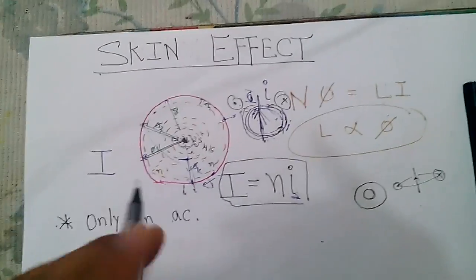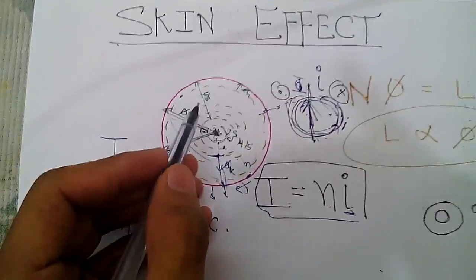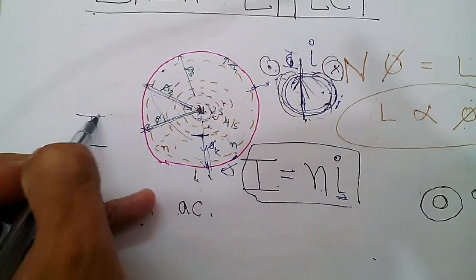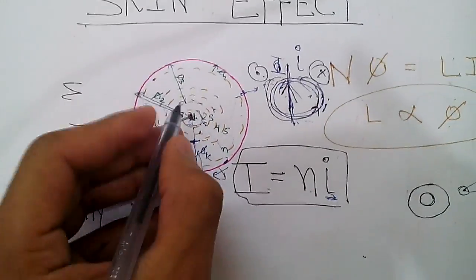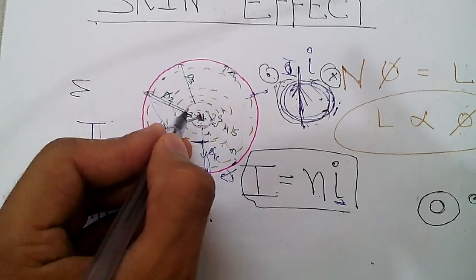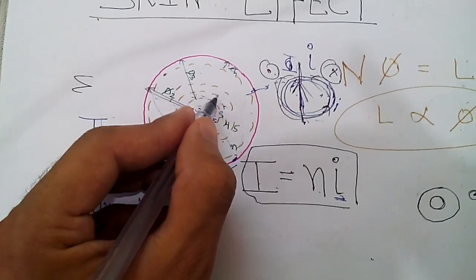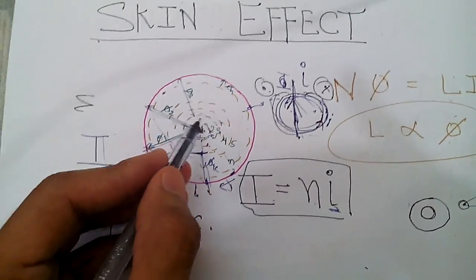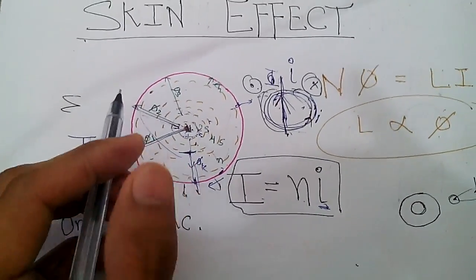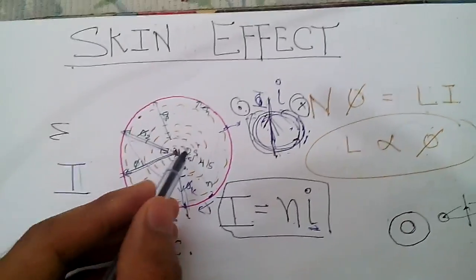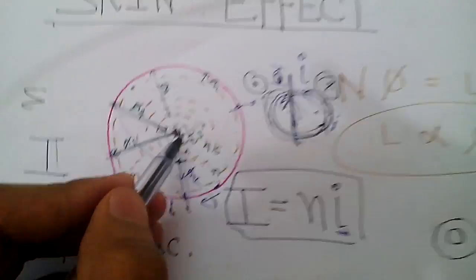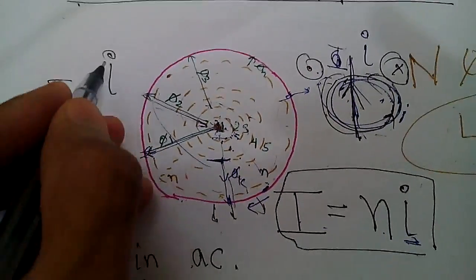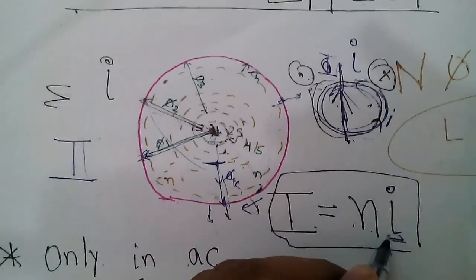To start the discussion, we consider a conductor carrying a total current I. Let us assume this conductor is made up of very thin layers — these are annular rings, infinitely small distance apart. Suppose there are n number of such rings, each carrying a current small i, so the total current is capital I.